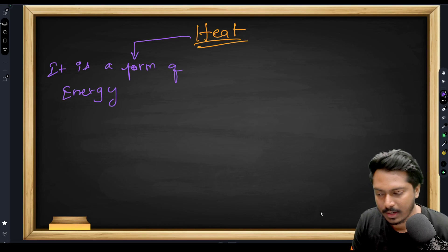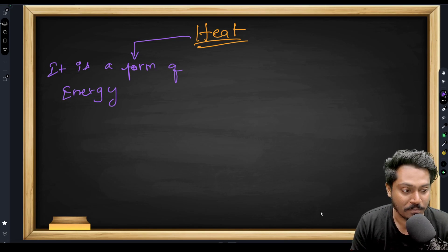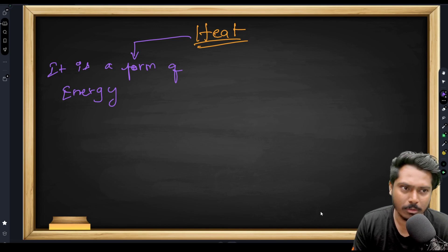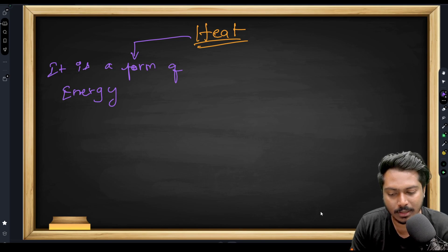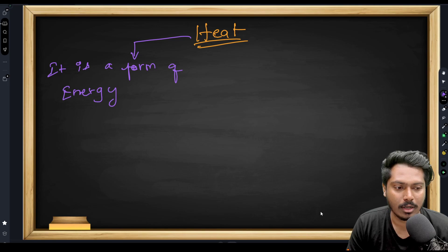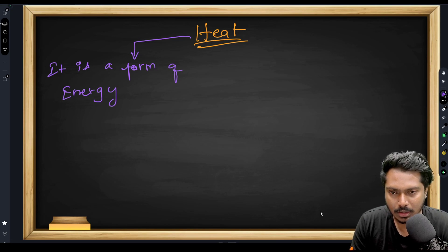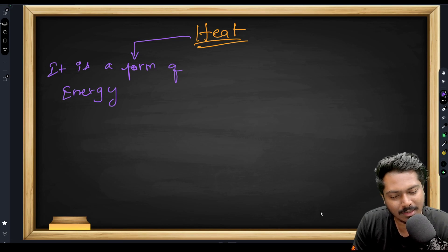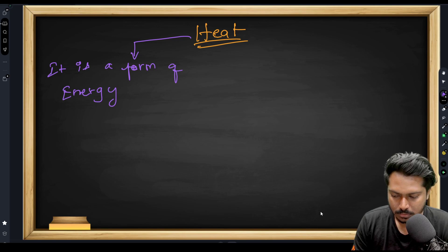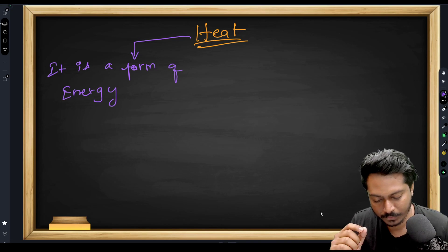For example, when you rub your hands together, heat energy is produced. Looking at the surface, a variety of heat energy is produced. Molecules have a force of attraction because they are staying in place. The heat of a body is the internal energy of its molecules.